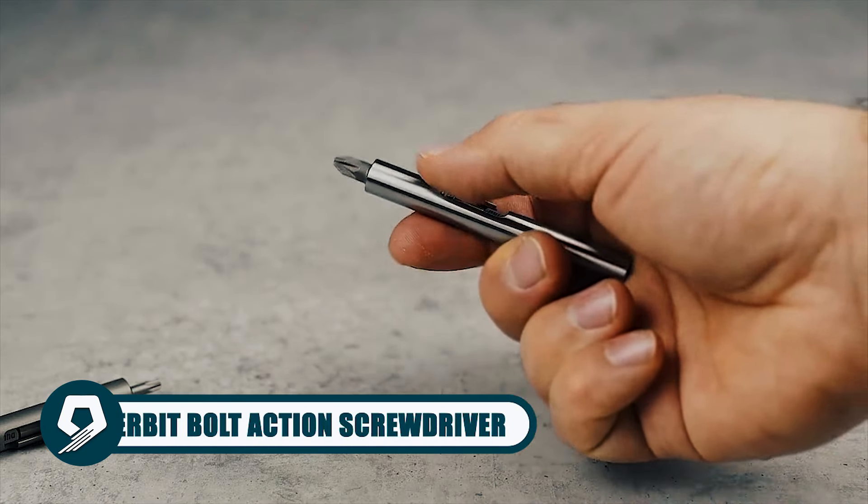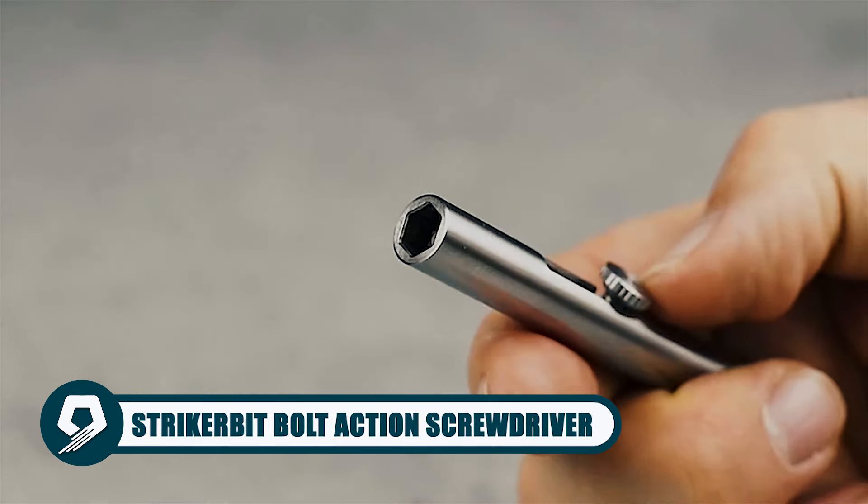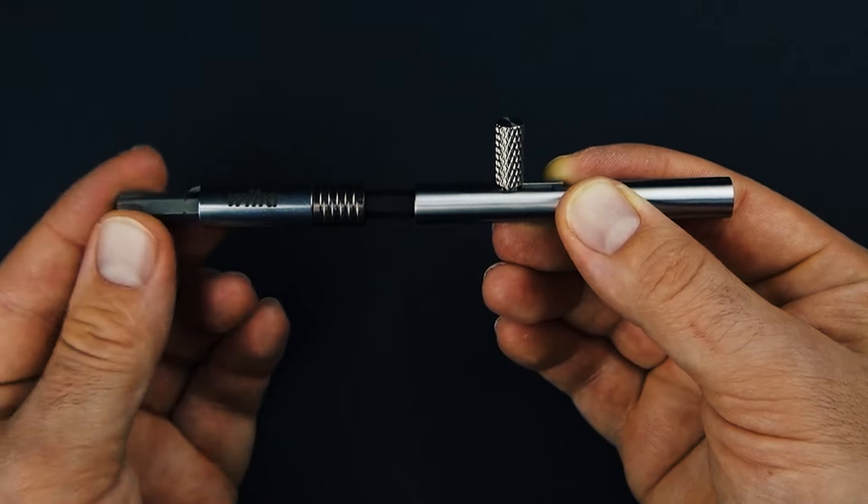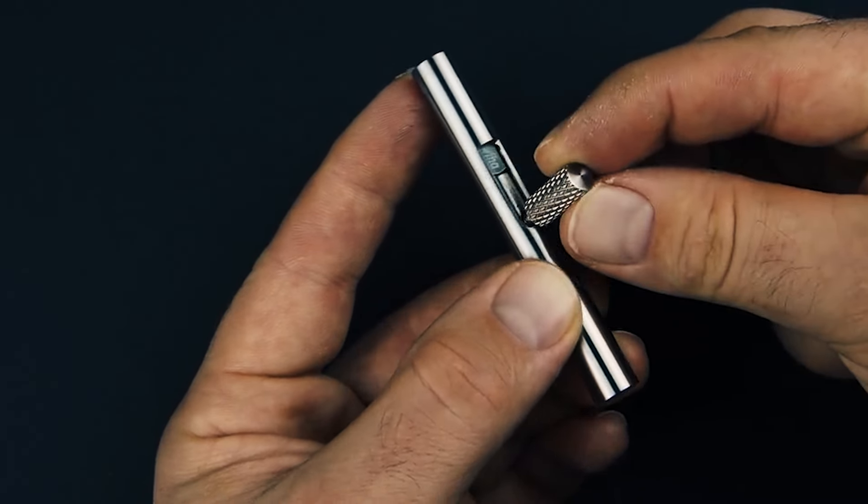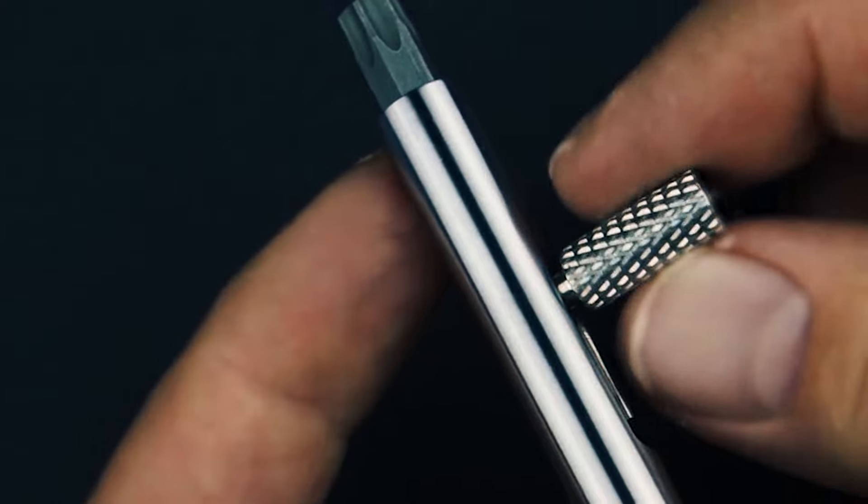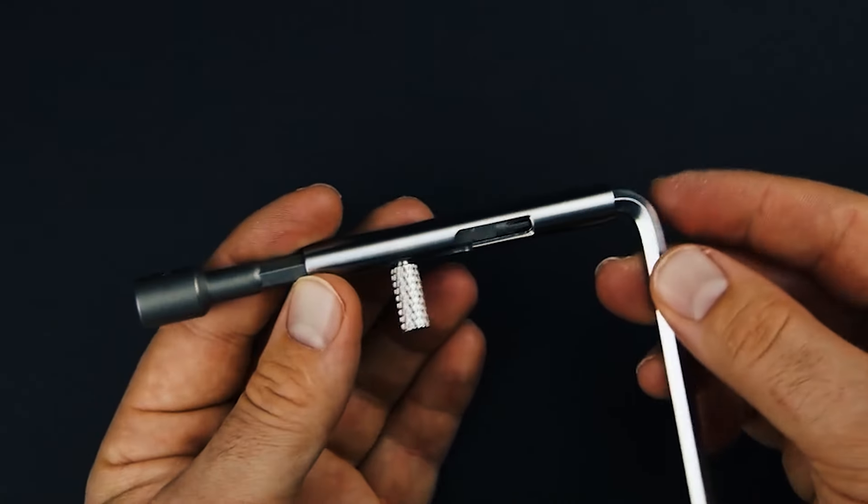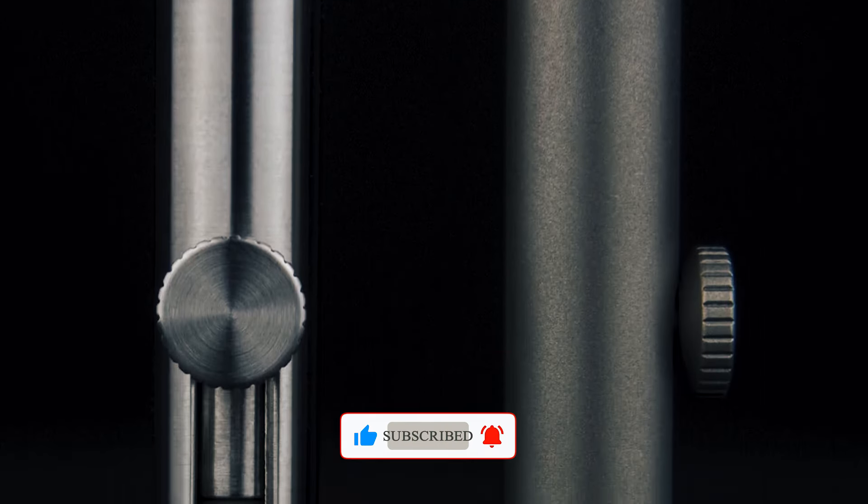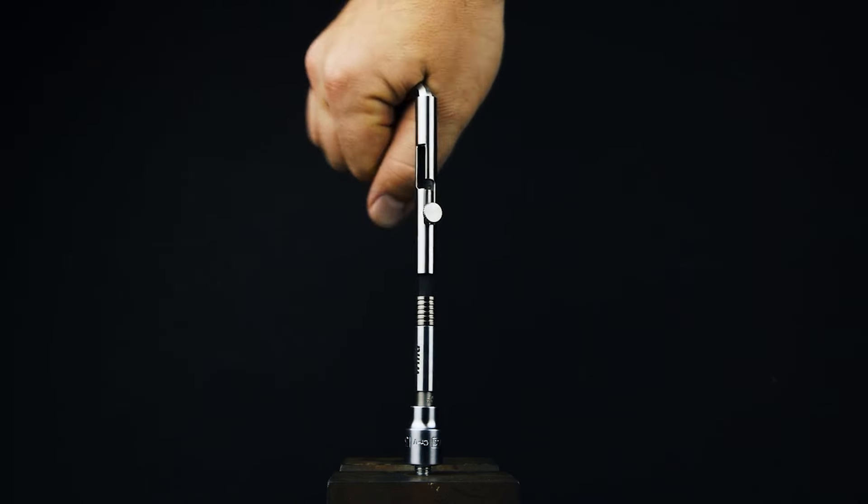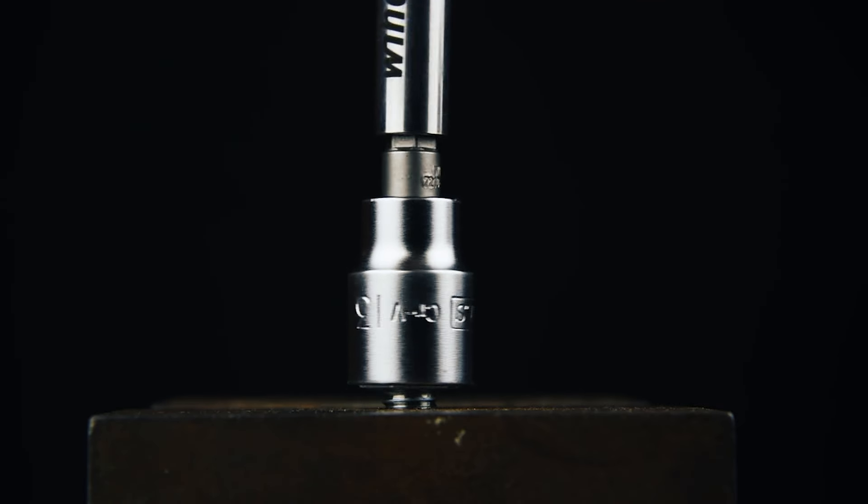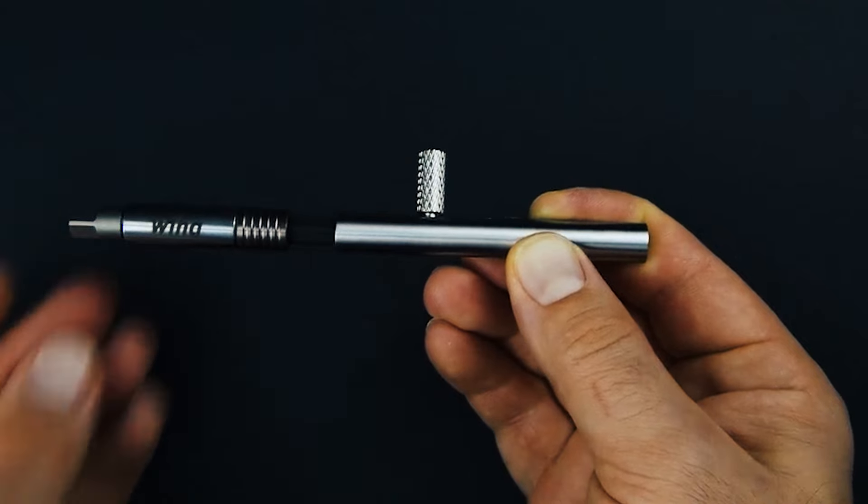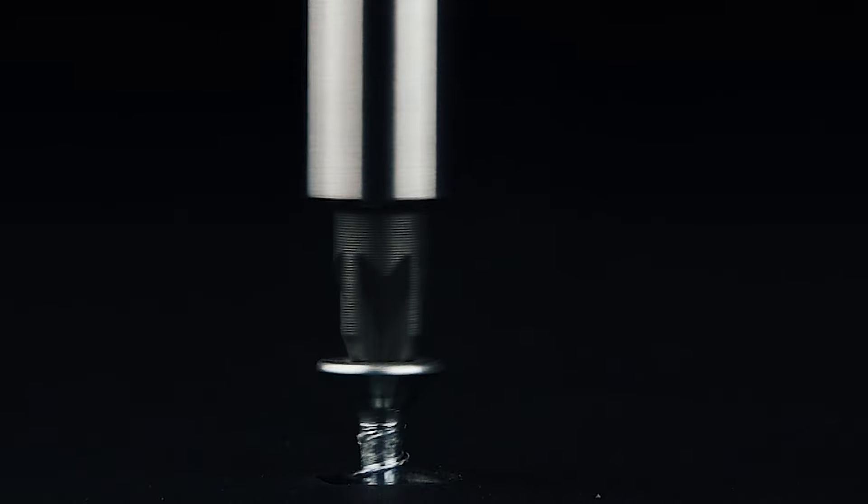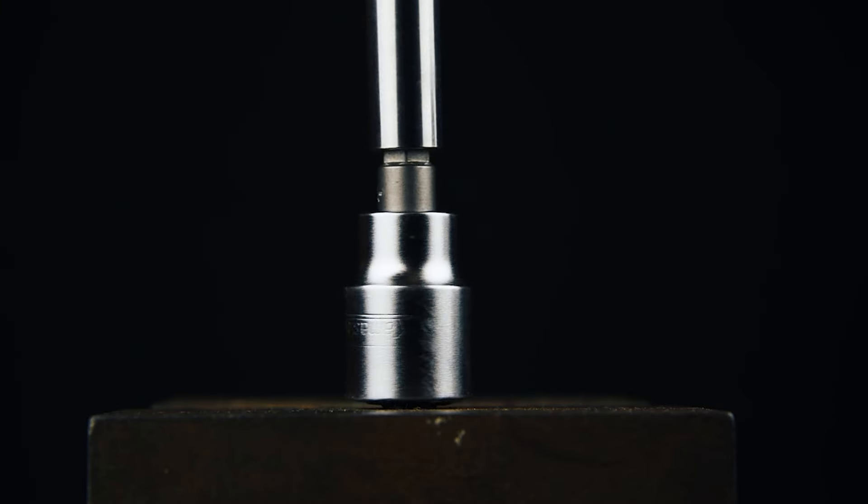Introducing the Striker Bit, the world's first bolt-action screwdriver designed for convenience and versatility. This pocket-sized tool features a bolt-action mechanism for quick extension and retraction, providing easy access and a satisfying fidgeting experience. With four locking positions and an additional knob for increased torque, it accommodates various tasks. Available in grade 5 titanium or stainless steel, Striker Bit accepts any 1/4-inch hex bits and incorporates strong neodymium magnets for secure bit retention. Compact at 80 millimeters, it's CNC machined for precision and durability, ensuring a lifetime of reliable performance in everyday carry situations.